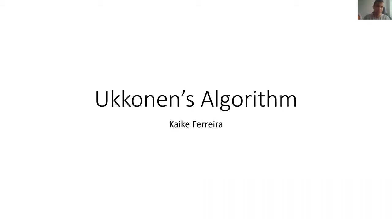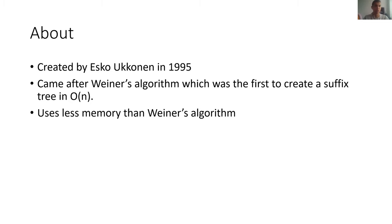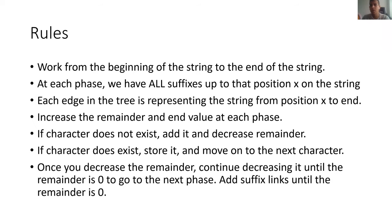Hello. I'm going to be explaining Ukkonen's algorithm. This is for COT 5405, spring semester 2021. We're going to talk about suffix tree creation. This algorithm was created by Usko Ukkonen in 1995. He's a Finnish computer scientist, and this algorithm came out after Weiner's algorithm, which was the first suffix tree creation algorithm in O(n) time. This uses substantially less memory than Weiner's algorithm. We're going to talk about the rules of this algorithm and how it operates, then give an example with some applications.